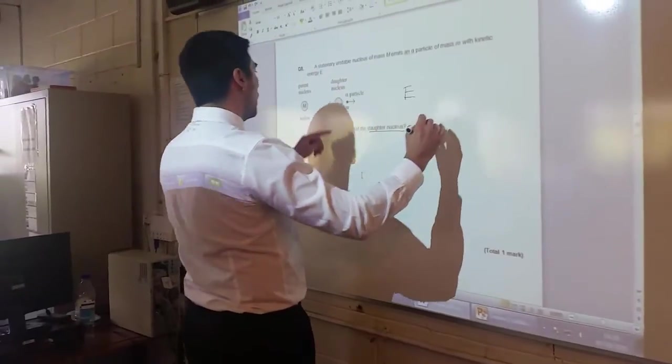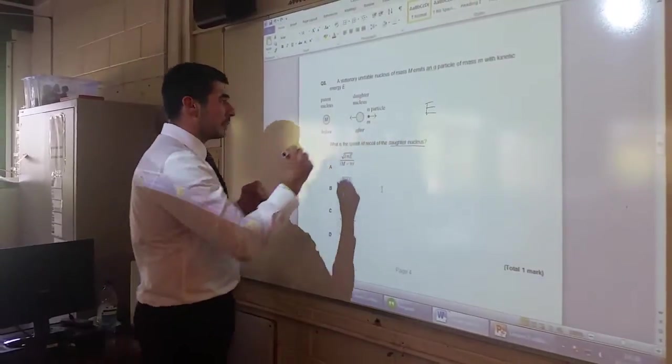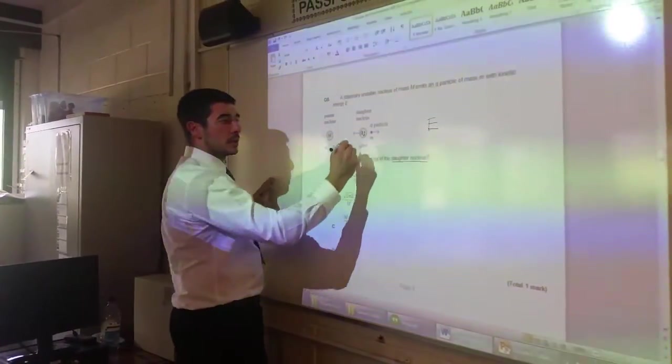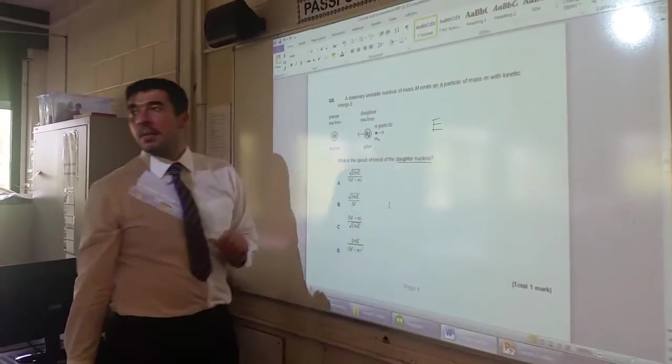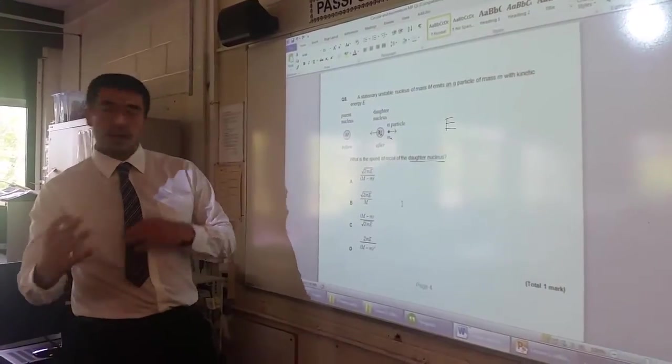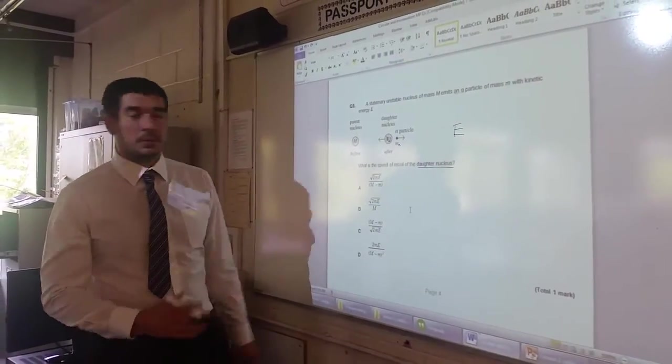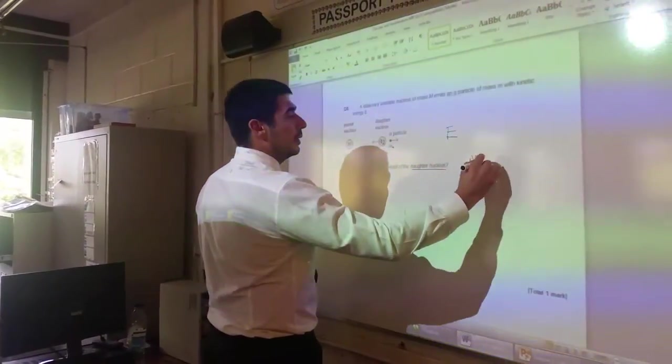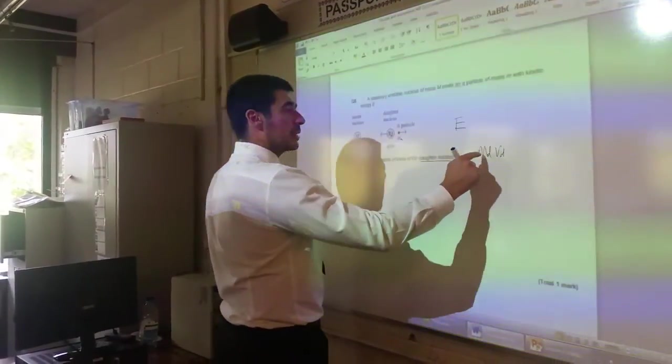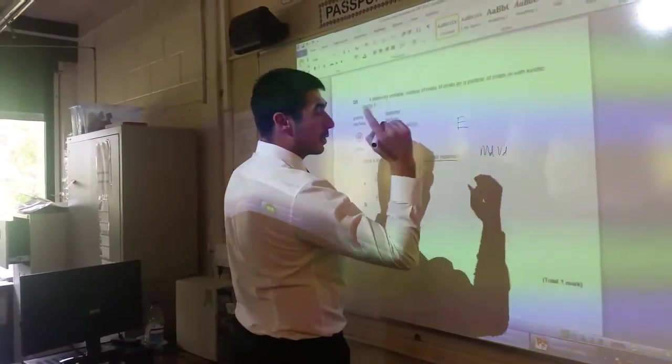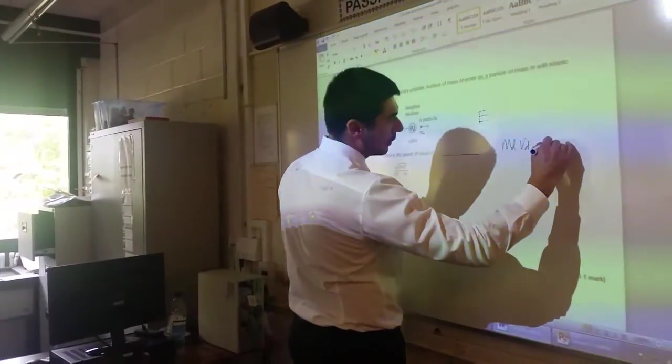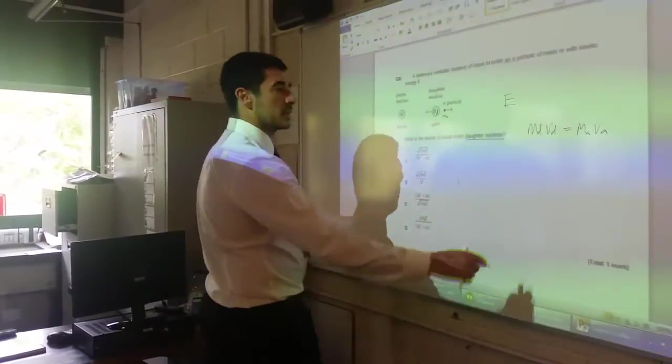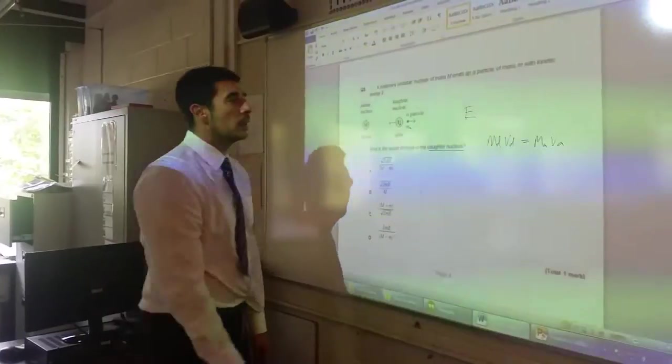So that statement I can write, and what I'll do to make this really easy for me to see what's going on, I'm going to label this MD, mass of the daughter nucleus, and I'm going to label that MA, mass of the alpha particle, so I don't get confused with my symbols. So MD times VD, mass of the daughter nucleus times the velocity of the daughter nucleus, which is the momentum, should be equal to MA times VA, mass of the alpha particle, velocity of the alpha particle.